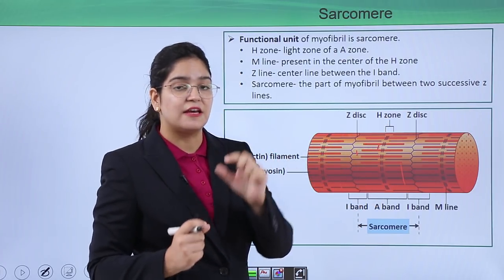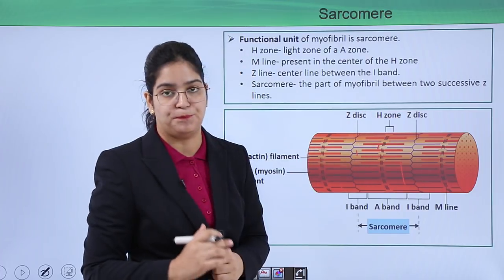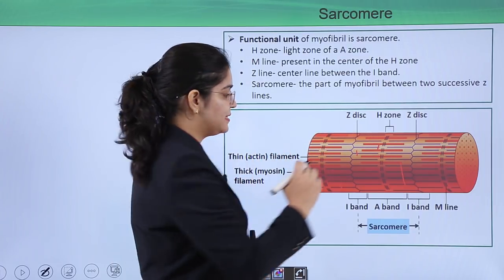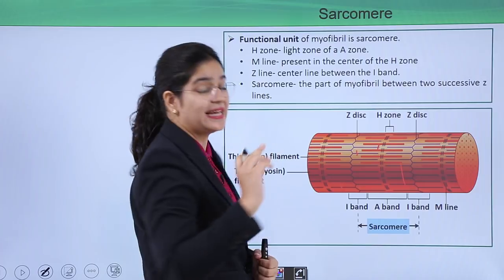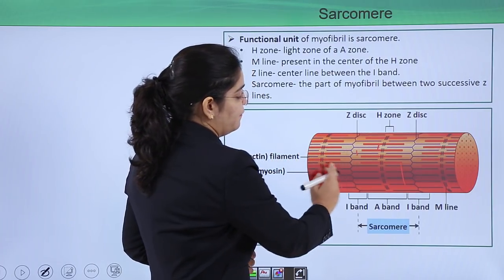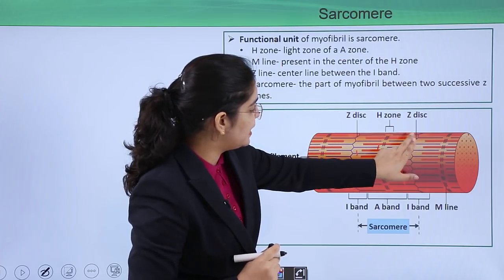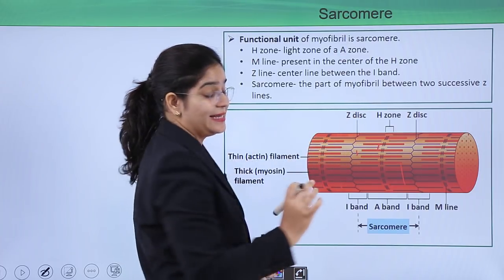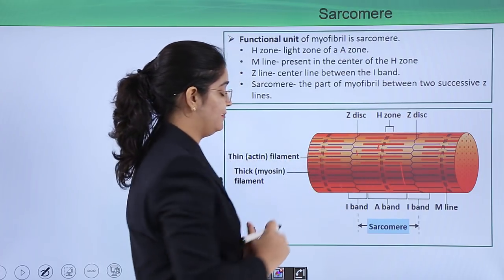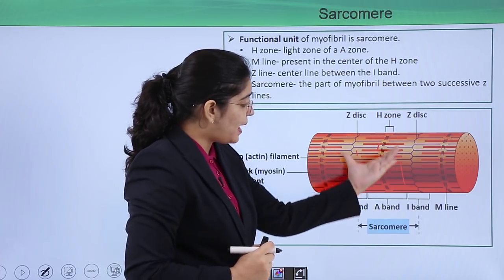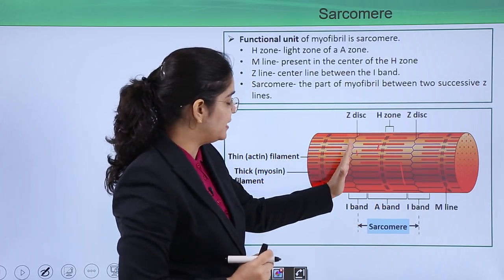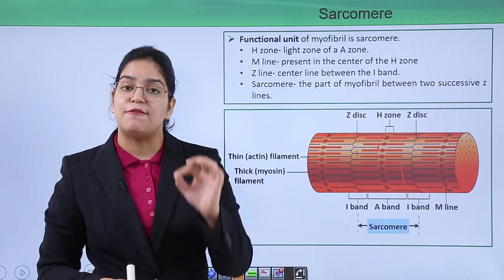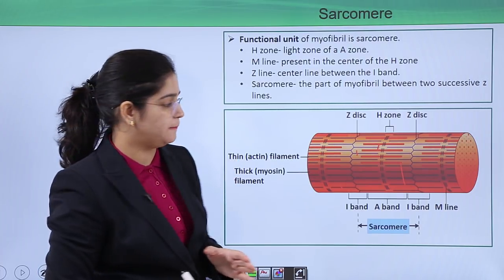A zone containing only the thick filament is called the H zone. The next very important structure is the Z disc. You can see a zigzag line cutting through the thin actin filament in the middle. This zigzag line is called the Z disc. The part of the myofibril between one Z disc and another Z disc is called the sarcomere, which is the functional unit of the myofibril.